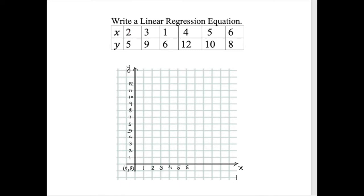So (2, 5): two is x, so that's a two, and I go up five — I put a dot there. Then (3, 9): three is x, nine is y. And (1, 6): one is going to give me six.